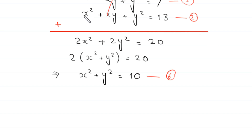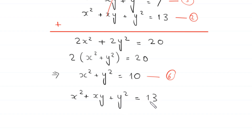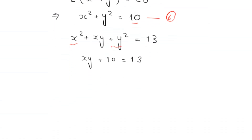Now in equation 2, we replace x squared plus y squared with the value 10 from equation 6. So the equation becomes xy plus 10 is equal to 13. We subtract 10 from both sides and get the value of xy is equal to 3. Let us call this equation 7.